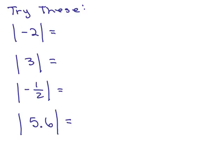So here's four problems for you to try. See if you could figure out the absolute value of these four numbers. All right, so what's the first one? This would be the absolute value of negative 2. How far is negative 2 to zero on the number line? Well, it's two spaces from zero.